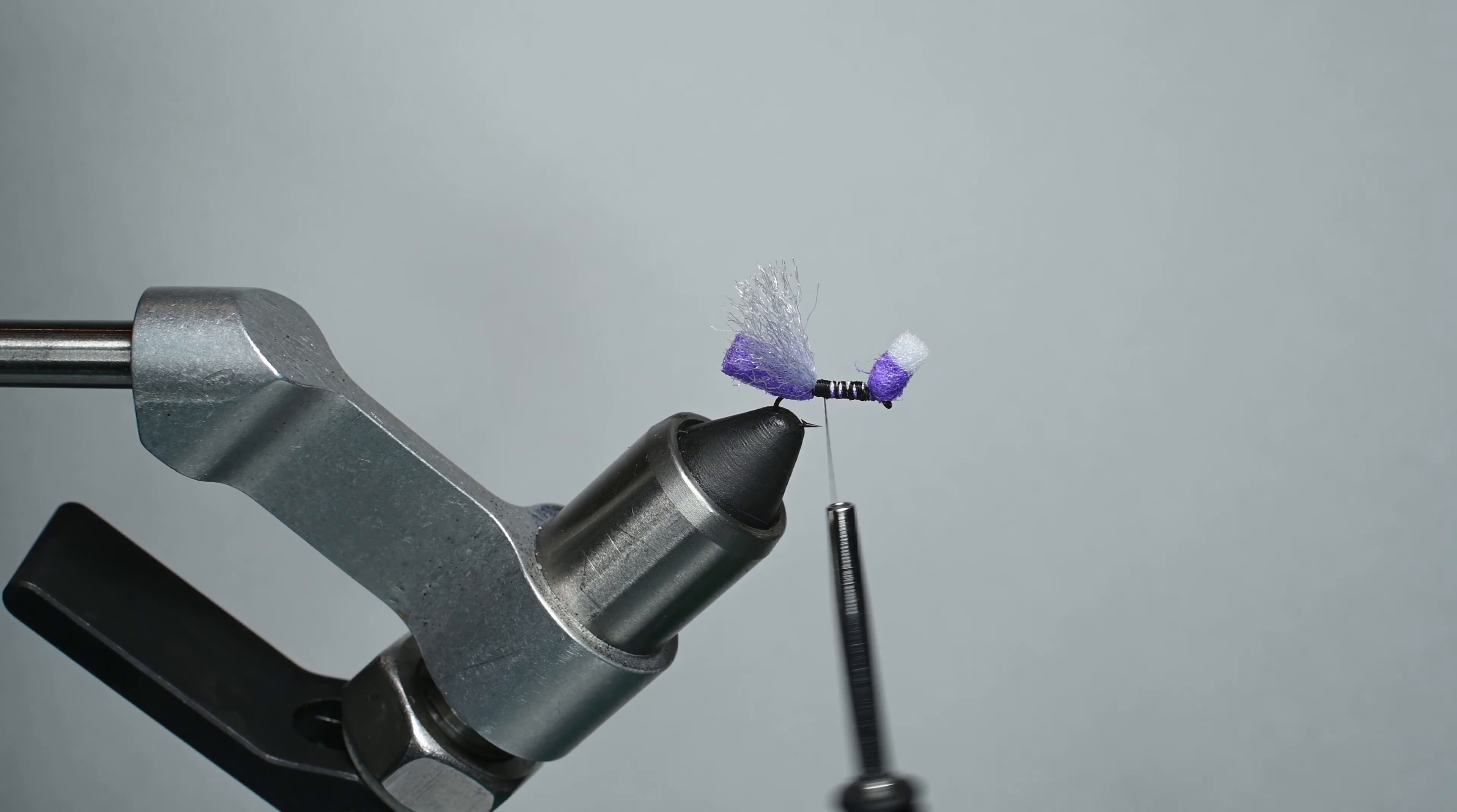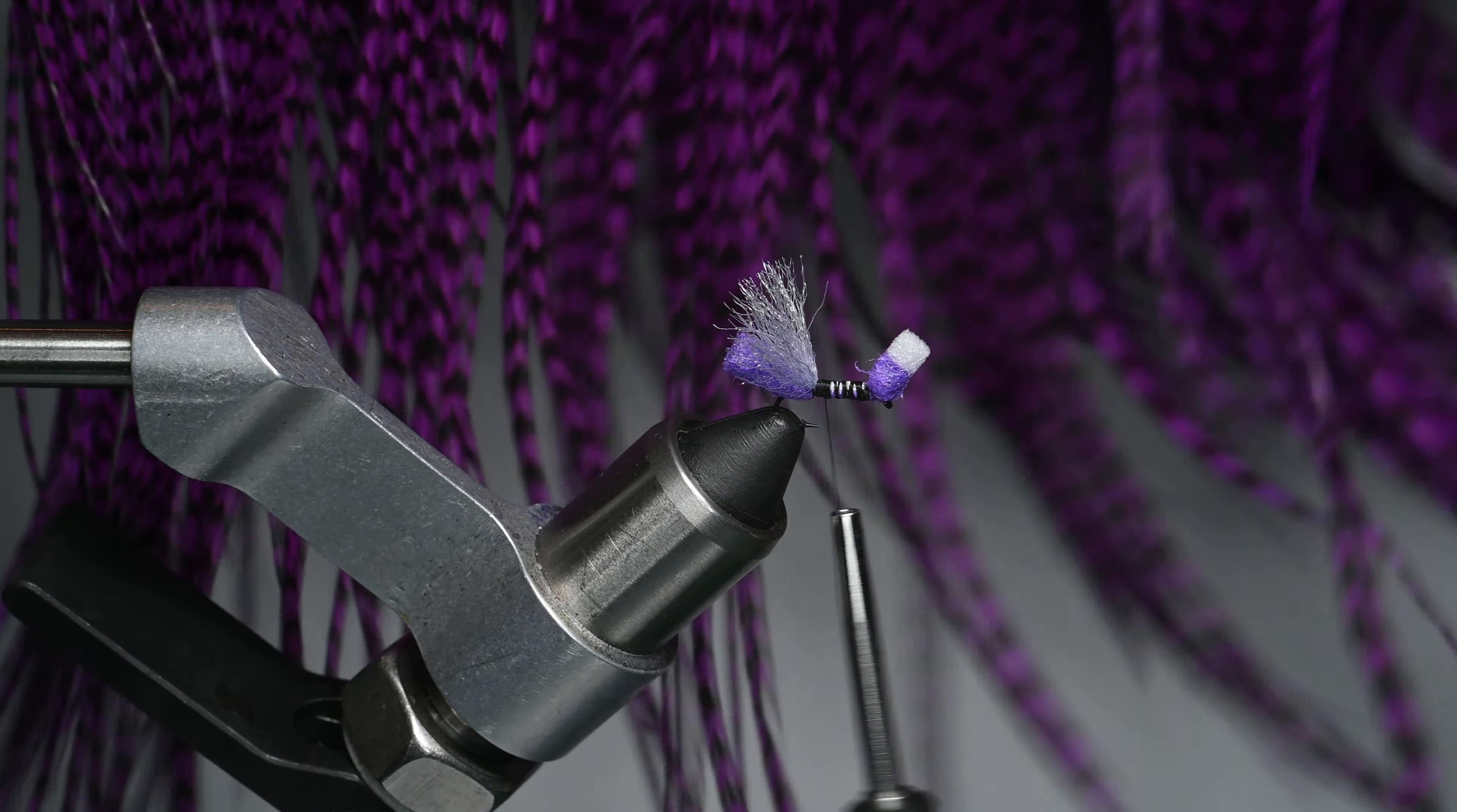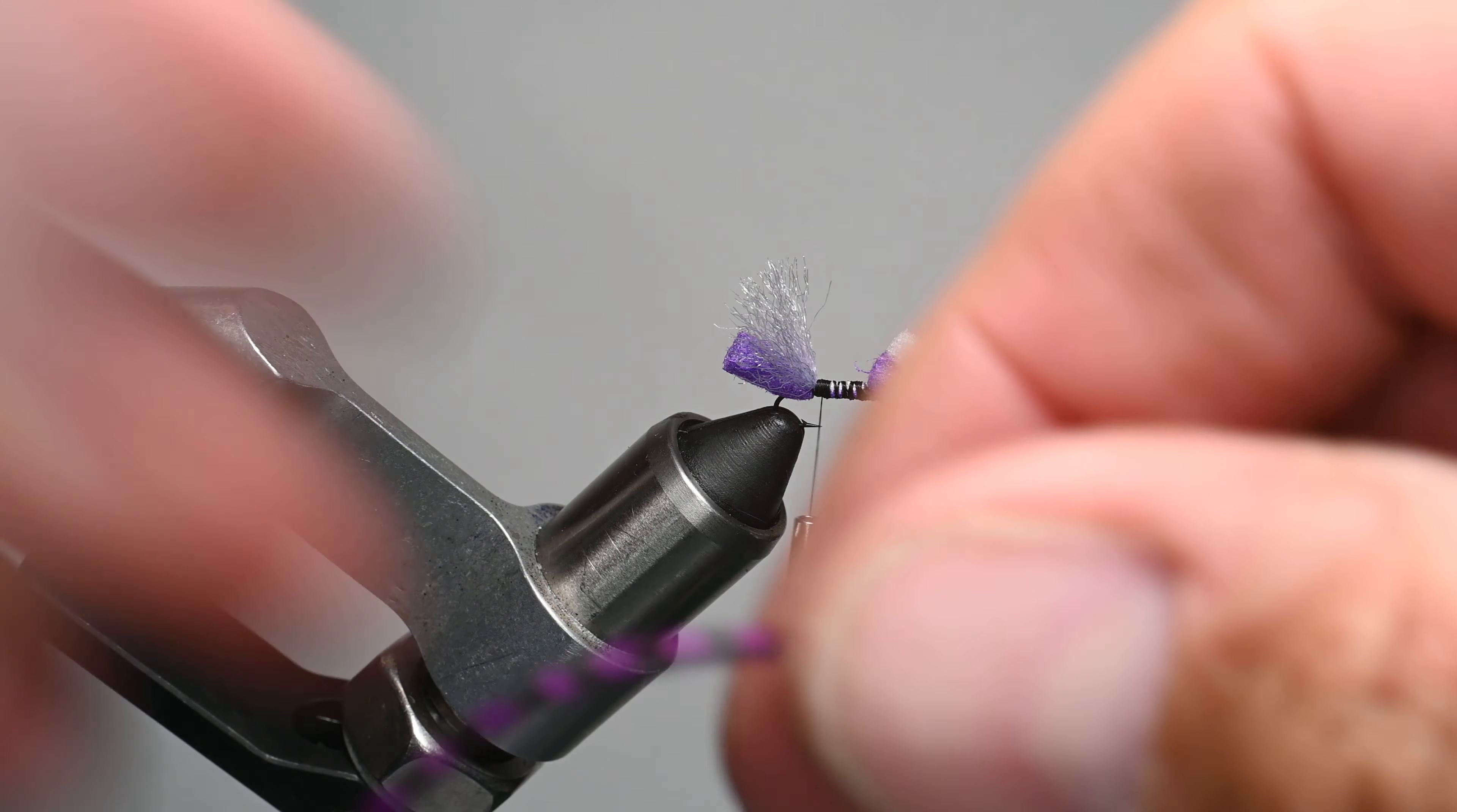We're using some high and dry Whiting Farms. This is a grizzly dyed purple, so it's got a nice little sheen to it, looks really good. I'm just going to size this. I like to step it up a size so that this is going to be our midsection and our legs of the fly and also help with some of the floating.